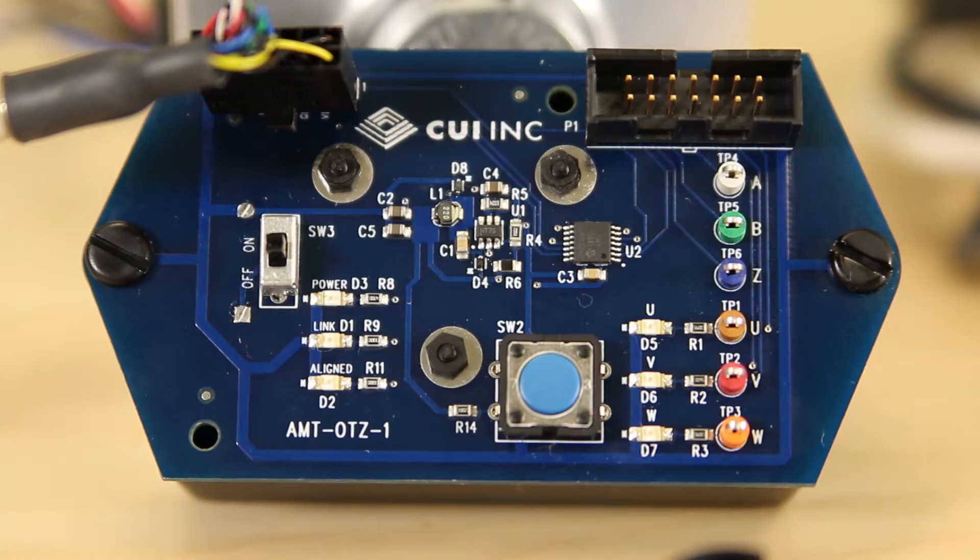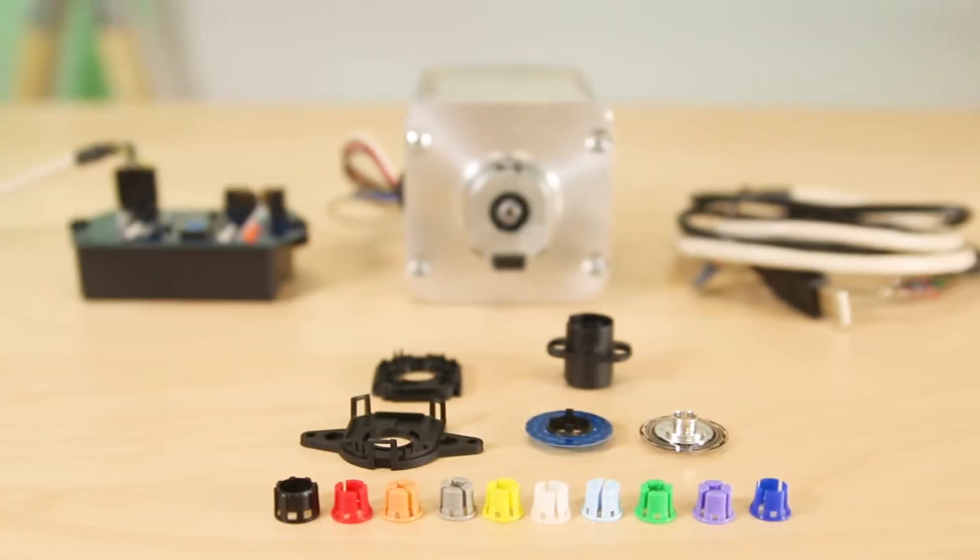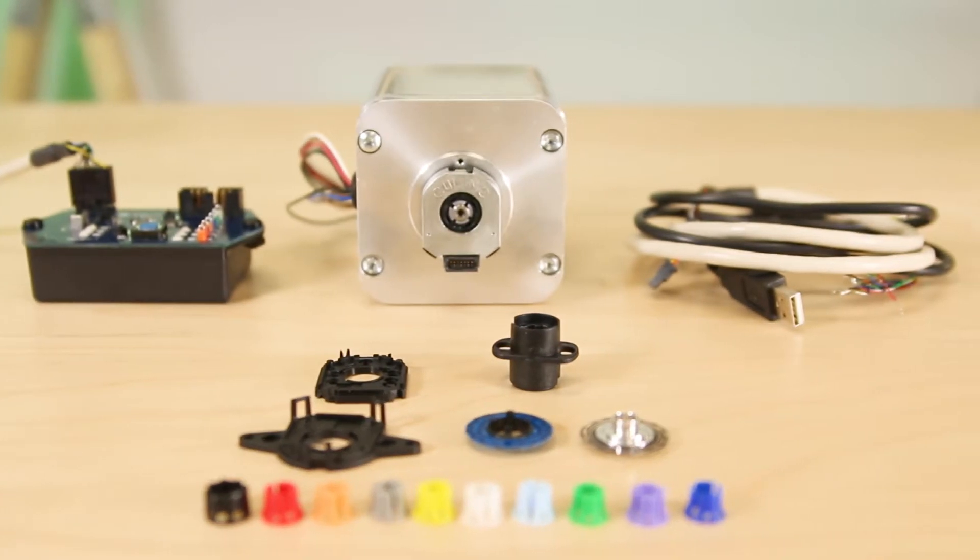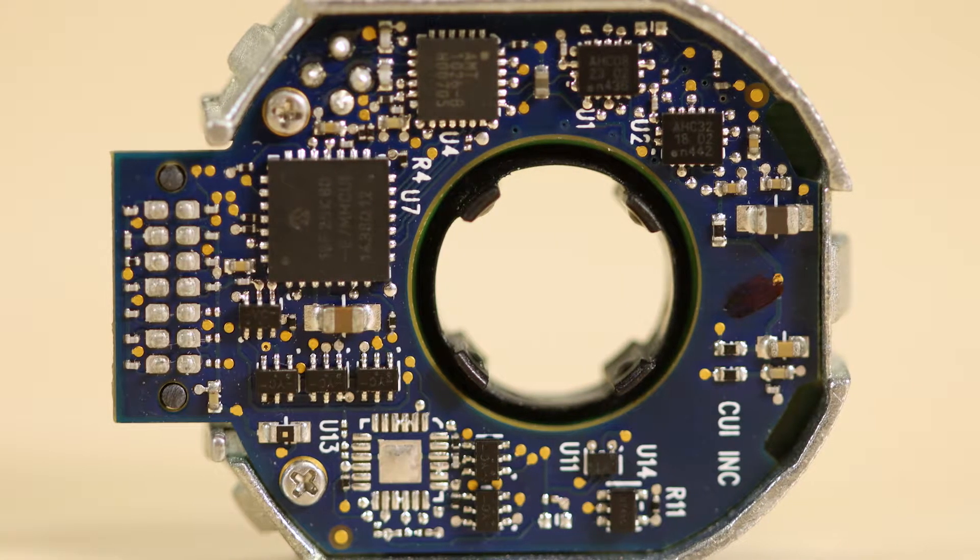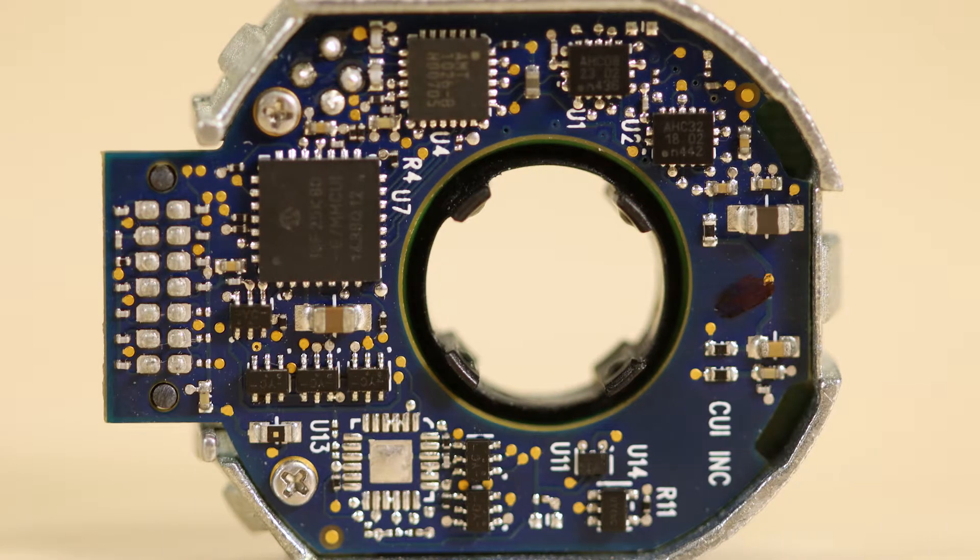Traditional installations of commutation optical encoders onto brushless DC motors is tedious and time-consuming because the optical disc must be physically and precisely rotated to align with the correct motor windings. Once aligned, the assembly must then be checked via back EMF for accuracy. This can take upwards of 15 minutes per motor. In contrast, the AMT31 has an ASIC and MCU so users can install the encoder in a few seconds.